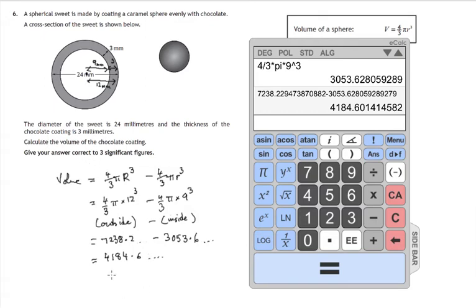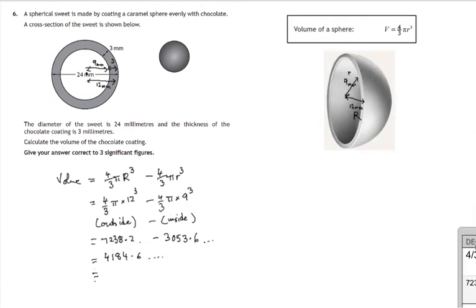Now it does say correct to three significant figures. So that's approximately. Well, it could be 4180 or it could be 4190. Remember we are asked to three significant figures: 1, 2, 3.